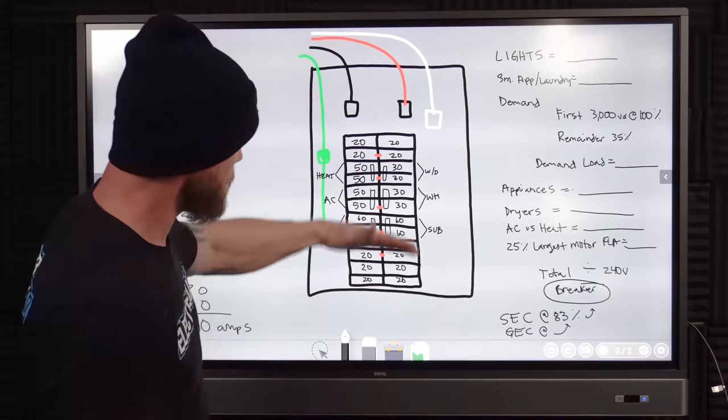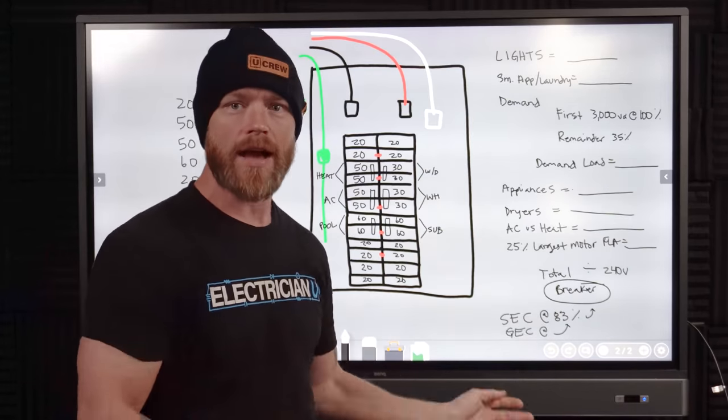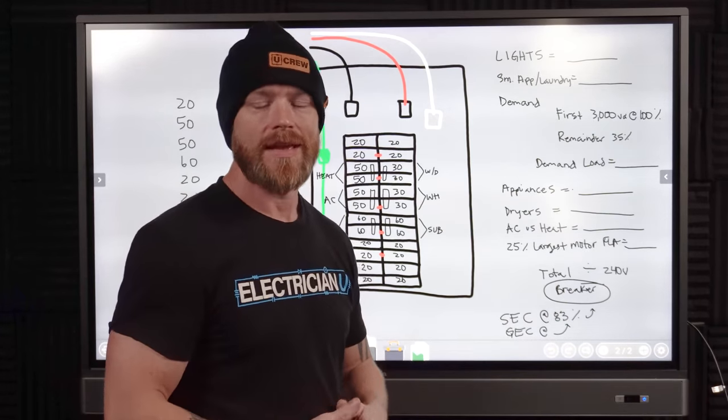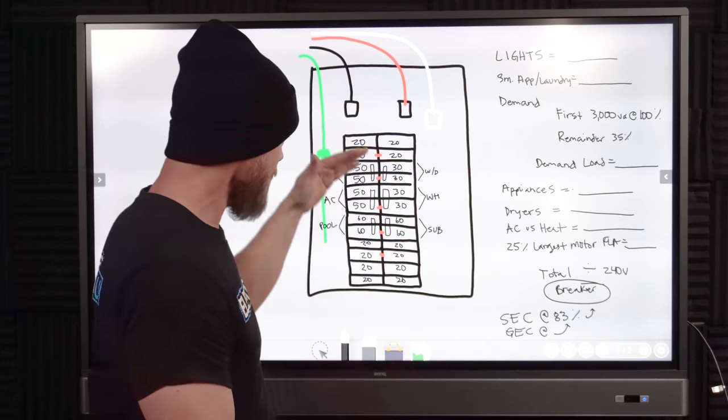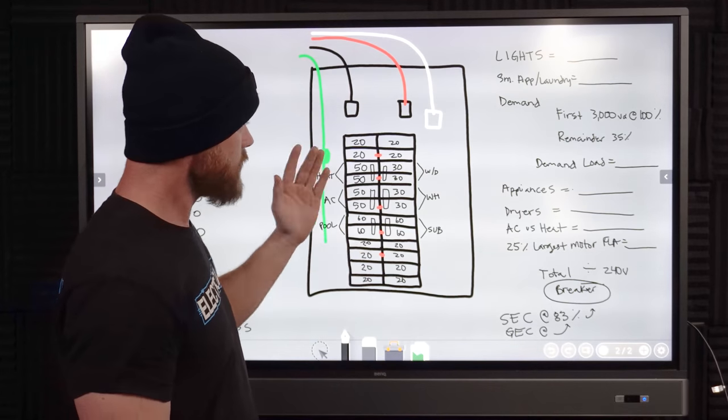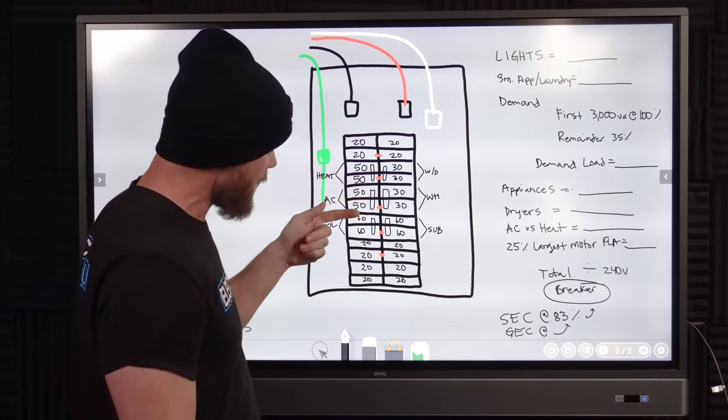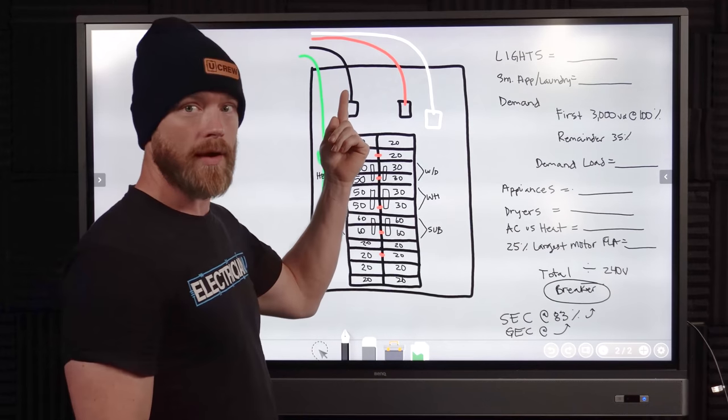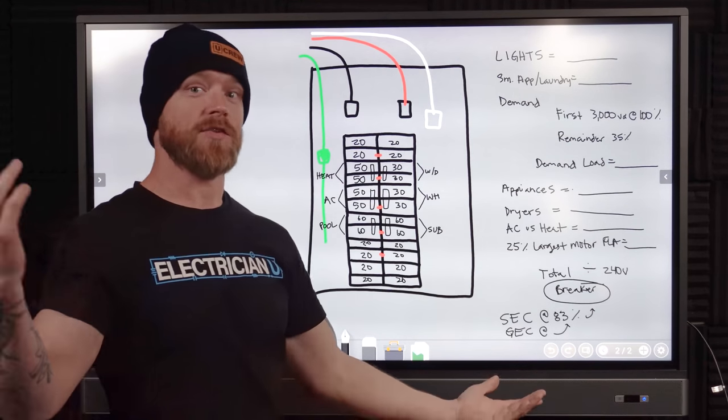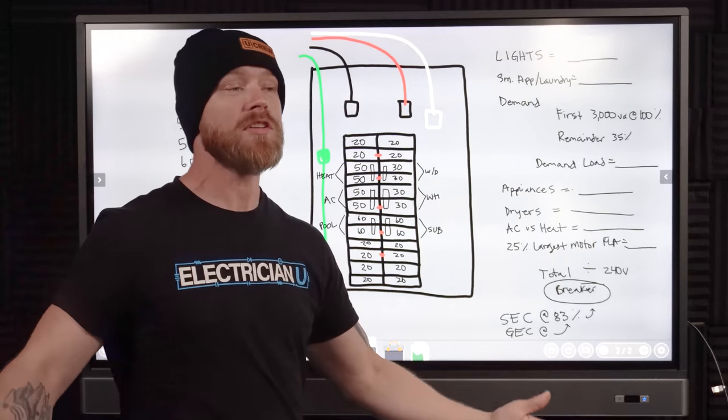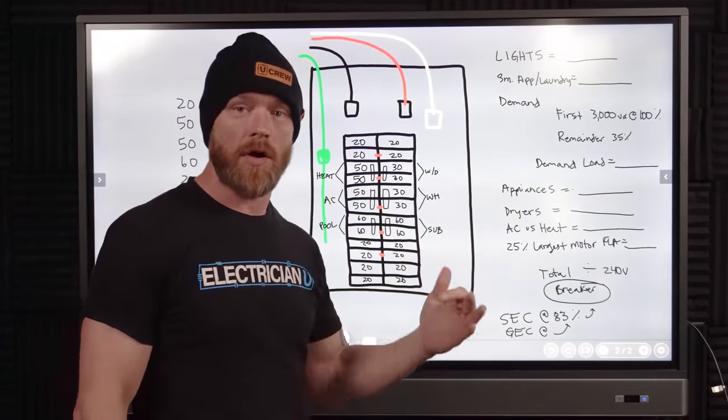Some people think when you see a panel and these are all individual breakers in there, that for some reason you're just supposed to add all of them up and that's the size of the service. And that's not what you do. The reason is it would be so expensive. If you added all of this stuff up, you would get 400 amps on just one of the phases. So if you added every black breaker on black phase alone, you'd have 400 amps. Red phase, you'd have 400 amps. So you definitely wouldn't add every single number in here because then you'd have an 800 amp number and nobody's putting 800 amp services. It's just unnecessary.